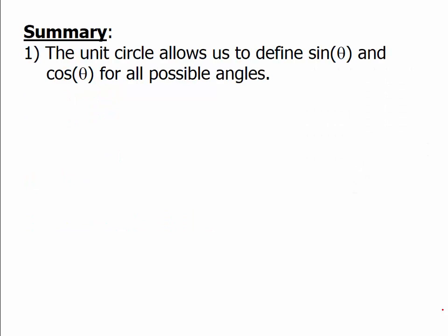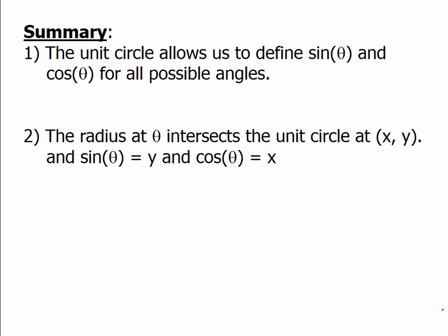The unit circle allows us to define sine and cosine for all possible angles. This is remarkable because it expands our understanding of how sine and cosine work from the very limited context of inside a triangle to all possible angles. The radius at angle θ intersects the unit circle at point (x, y): sine of θ equals the y-coordinate of that point, and cosine of θ equals the x-coordinate. We'll talk about more implications of this definition in the next video.